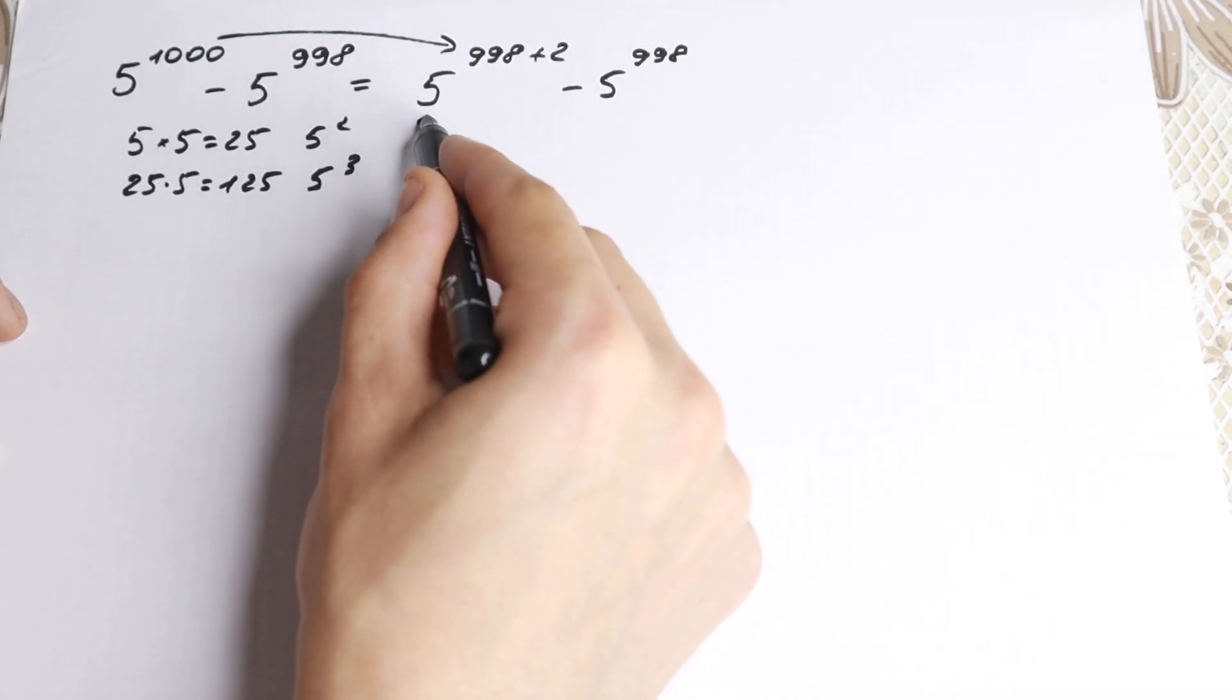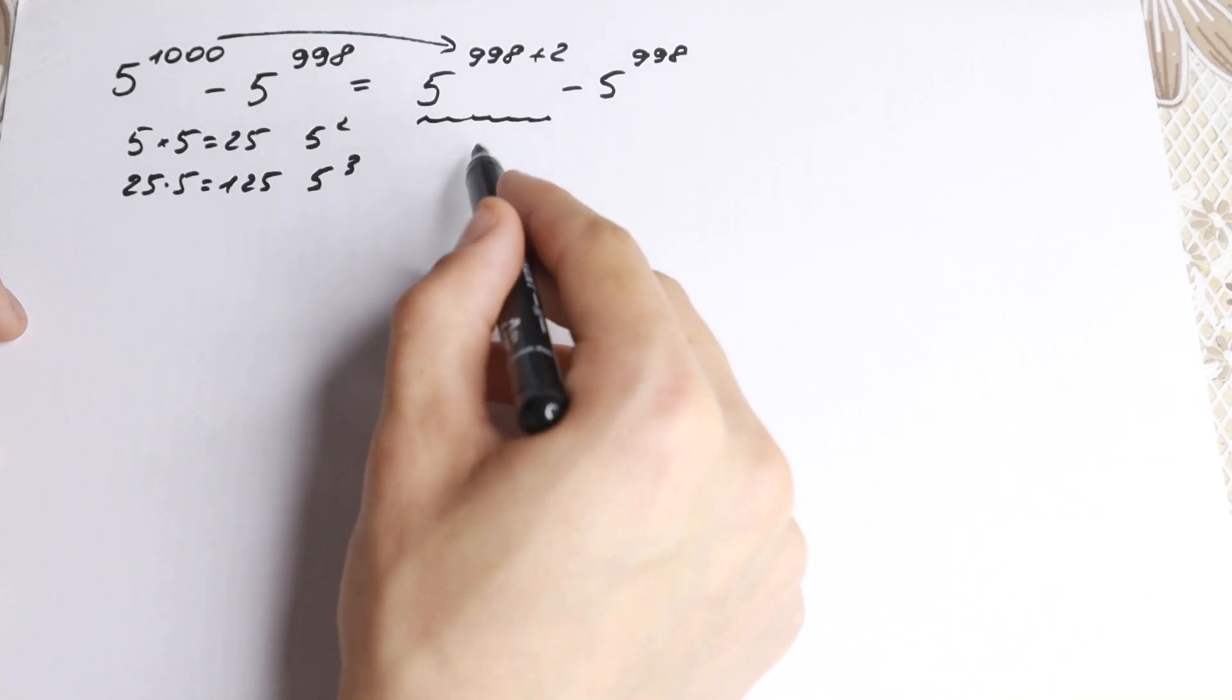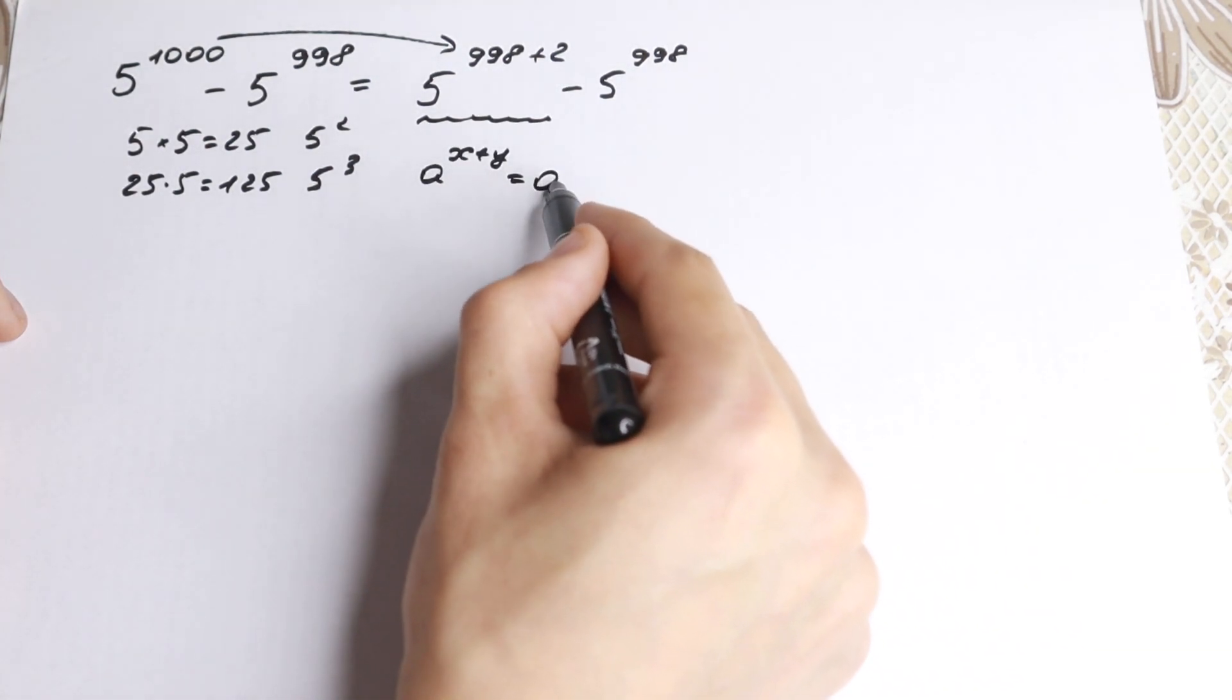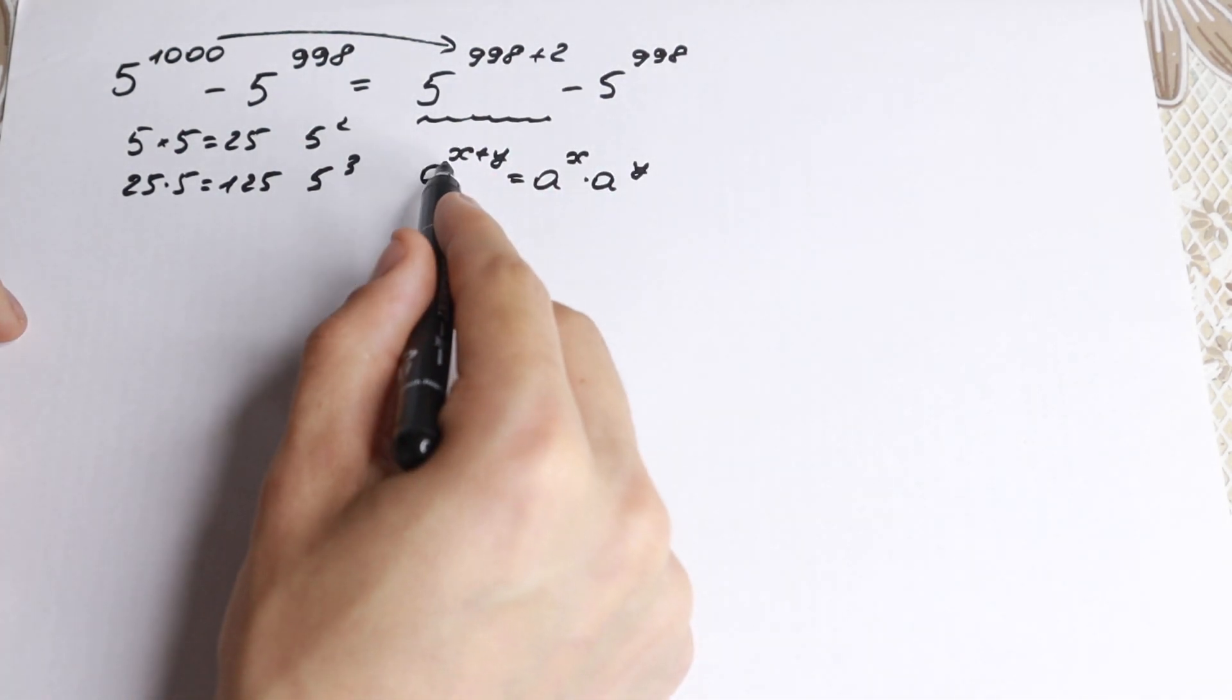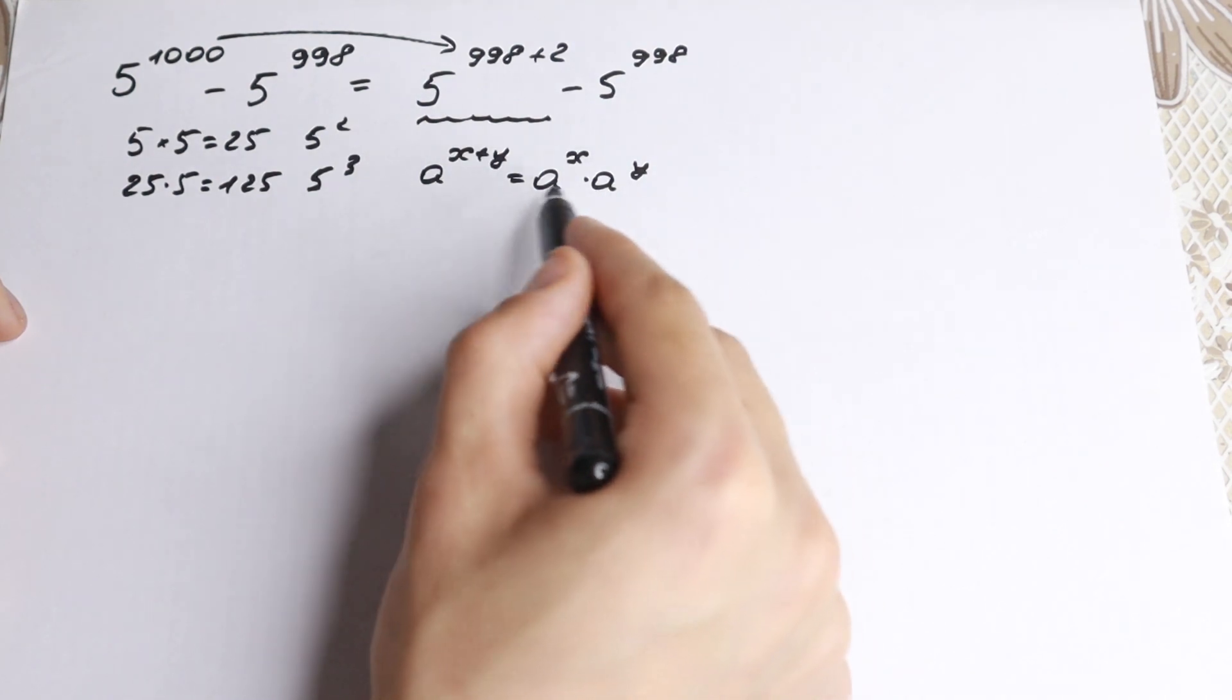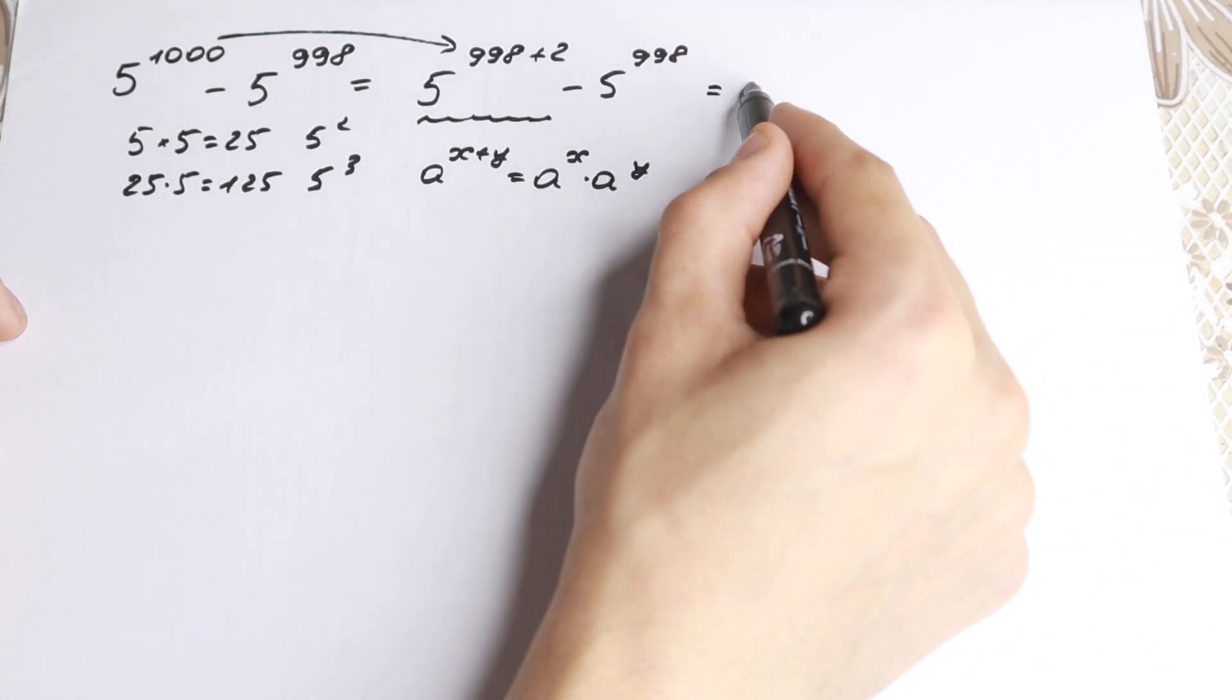If you know this rule: a to the power x plus y can be written as a to the power x times a to the power y. We have this situation, so as a result,